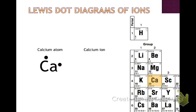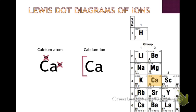Now we'll switch to ions and show Lewis dot diagrams of ions. We've drawn the calcium atom with 2 valence electrons. Calcium is a metal, so it loses its electrons — it transfers them to a non-metal. Calcium has a plus two charge, meaning it loses 2 electrons. Since electrons are negative, losing electrons makes it positive. Since calcium loses 2 electrons, there end up being zero electrons around the calcium ion. We show brackets around the calcium and display its plus 2 charge superscripted on the outside.